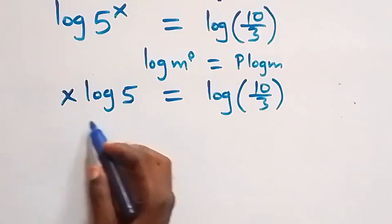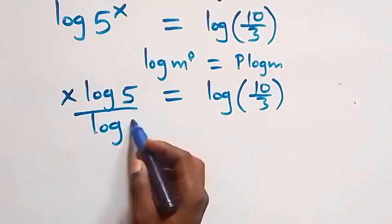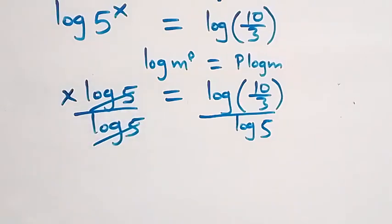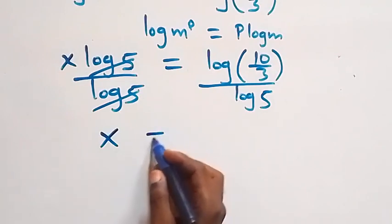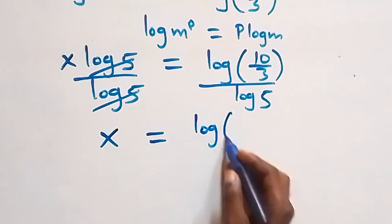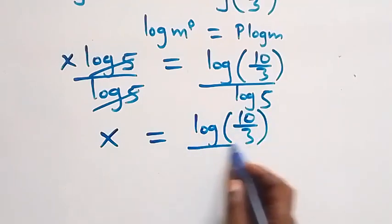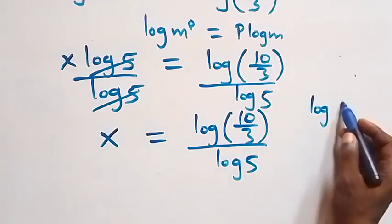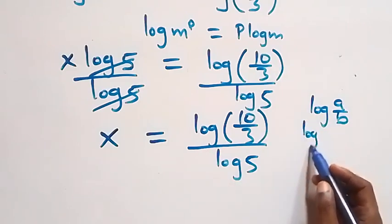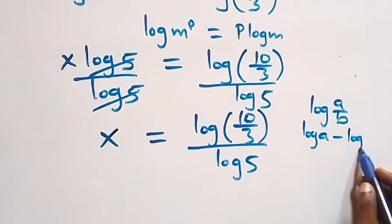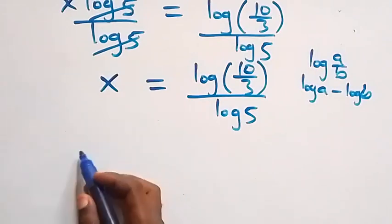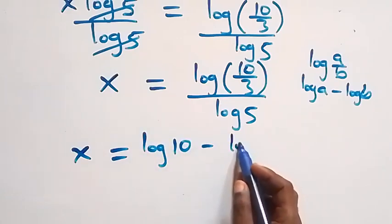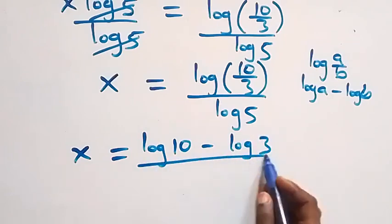In the next step, we divide both sides by log 5. Log 5 cancels on the left, giving us x equals log(10/3) over log 5. Applying the log quotient rule, log(a over b) equals log a minus log b, we get x equals log 10 minus log 3, all over log 5.